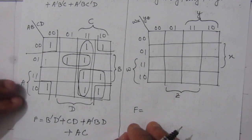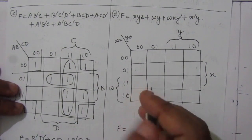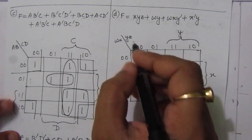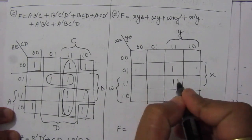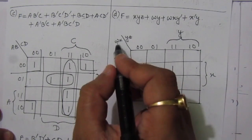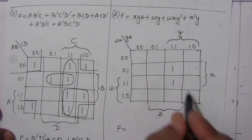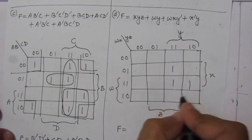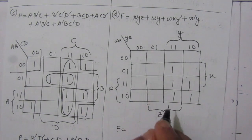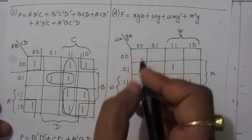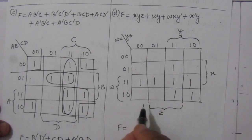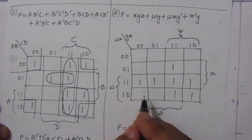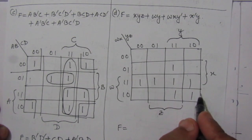Now let us solve the fourth part of the problem. We have XYZ: YZ is that column and X value covers the second and third rows, so one-one there. Then we have WY: W covers those two rows and Y covers those two rows, so put one there. Then we have WXY-bar: WX means that column and Y-bar is the first two rows, so put one there. Then we have X-bar Y: X-bar means the first row and the fourth row, and Y value covers those columns.